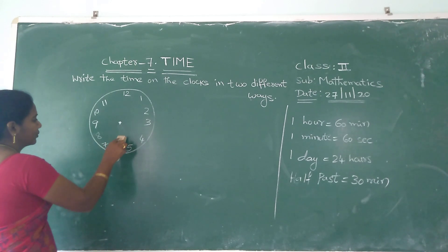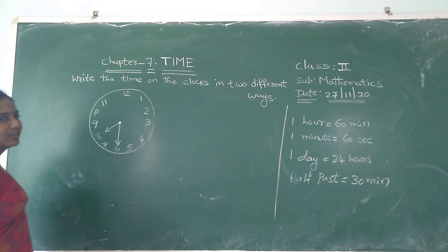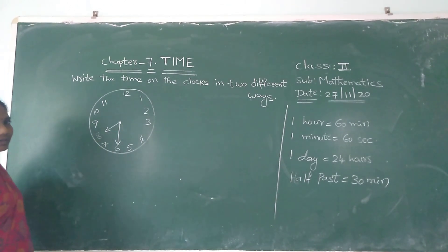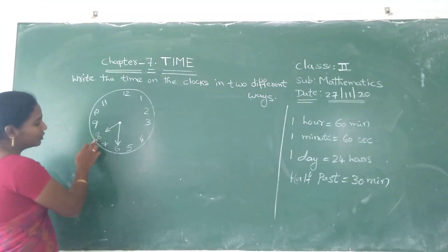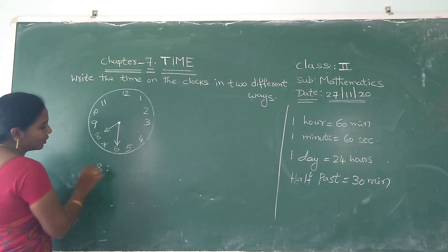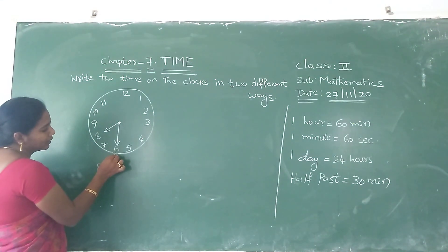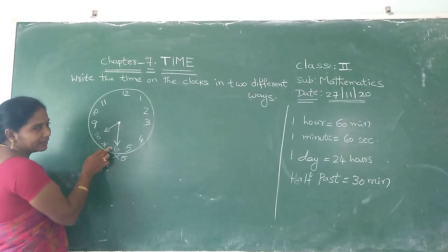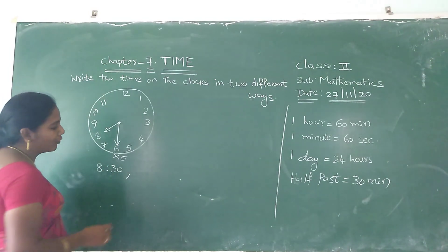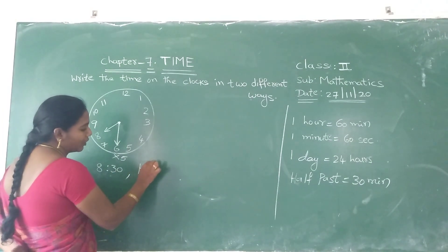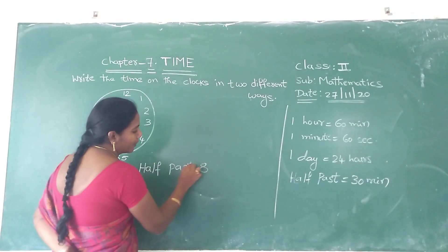Next: 8:30. First, which hand number do you have to write? The hour's hand. Which is the hour's hand here — shorthand or long hand? Shorthand is the hour's hand. So shorthand number is 8. Keep 2 dots. On 6, the minute's hand is there — multiply it: 5 times 6 is 30. So the time is 8:30. Now in spelling form: first write 30 minutes — how do you write 30 minutes? Half past. How many hours? 8 hours. Half past 8.